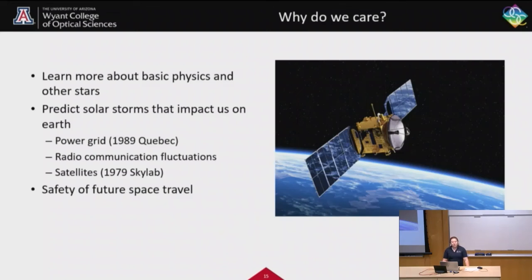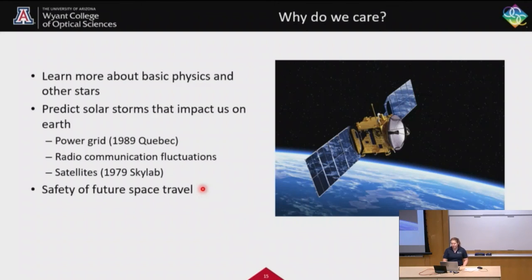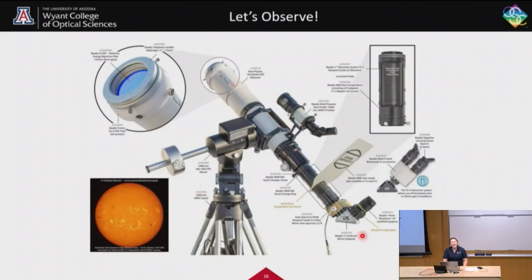We care about observing the sun because it helps us learn more about basic physics and the physics of other stars. It also helps us predict solar storms that impact Earth — for instance, the entire power grid of Quebec went down in 1989 because of a solar storm. Solar storms also cause radio fluctuations and satellite damage, such as when a Skylab satellite fell to Earth in 1979 due to solar storm damage. Understanding solar activity will also impact the safety of future space travel and protecting astronauts on long missions.